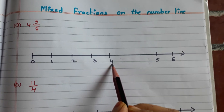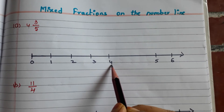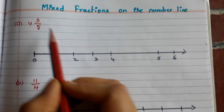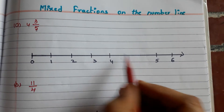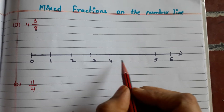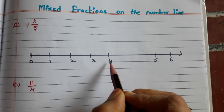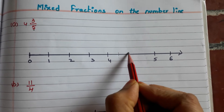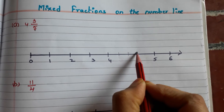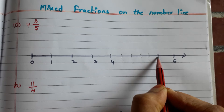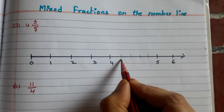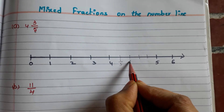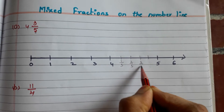After that we have to place 3/5 on the number line. Here the denominator is 5, so we have to make 5 equal parts between 4 and 5 on the number line. So this is 1, 2, 3, 4, and this is 5. Now this part will be 1/5, 2/5, 3/5.